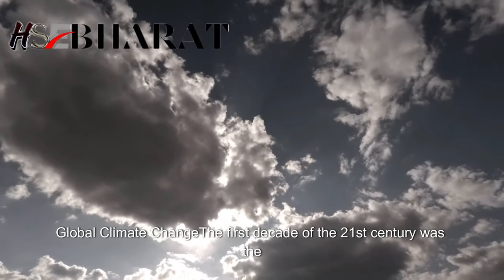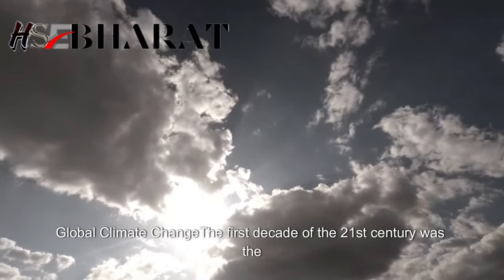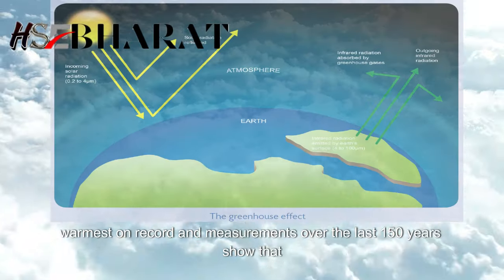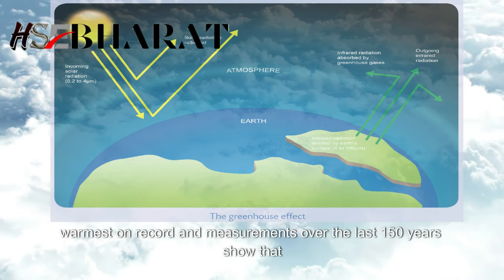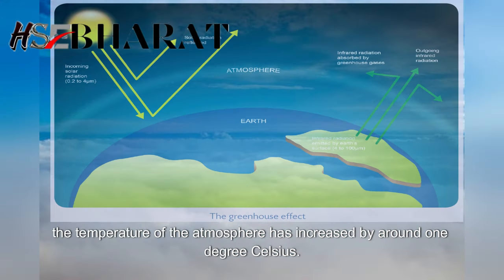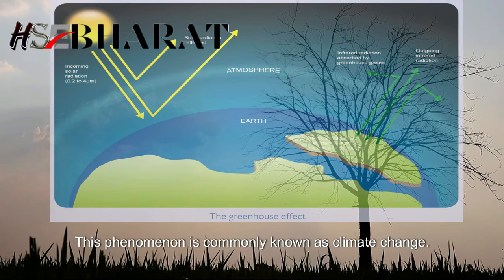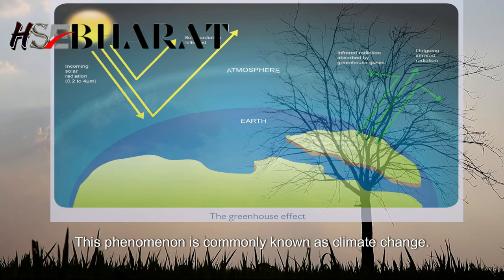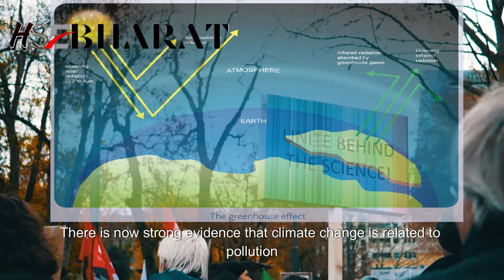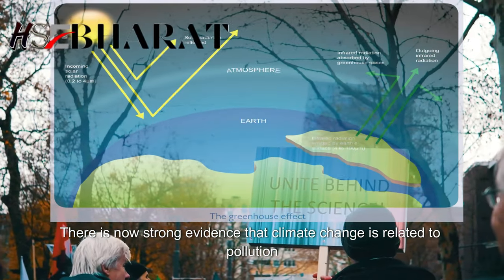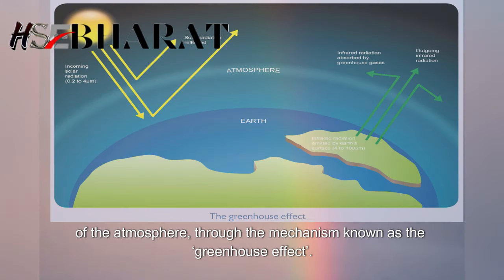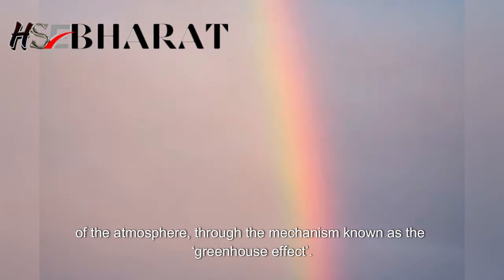Global climate change: the first decade of the 21st century was the warmest on record, and measurements over the last 150 years show that the temperature of the atmosphere has increased by around 1 degree Celsius. This phenomenon is commonly known as climate change. There is now strong evidence that climate change is related to pollution of the atmosphere through the mechanism known as the greenhouse effect.